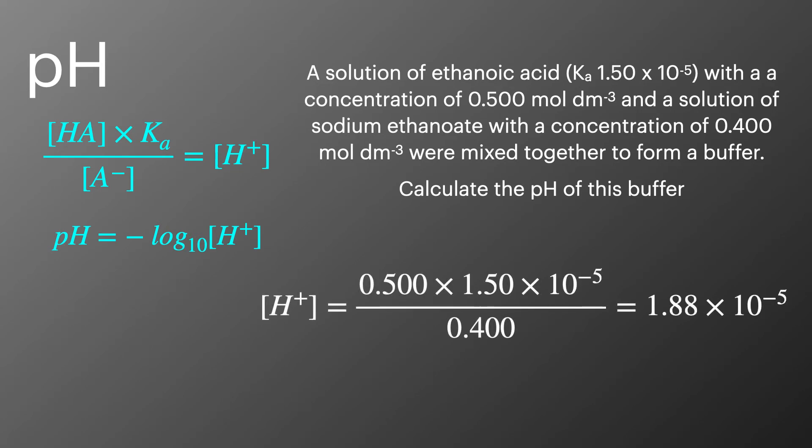We'll put the numbers into the Ka expression to get a value for 1.8 times 10 to the minus 5 for the concentration of hydrogen ions and then we'll put that into the pH expression to get a pH of 4.73.